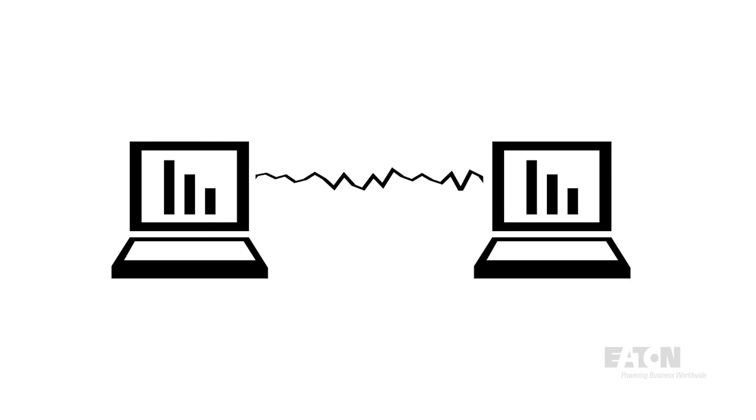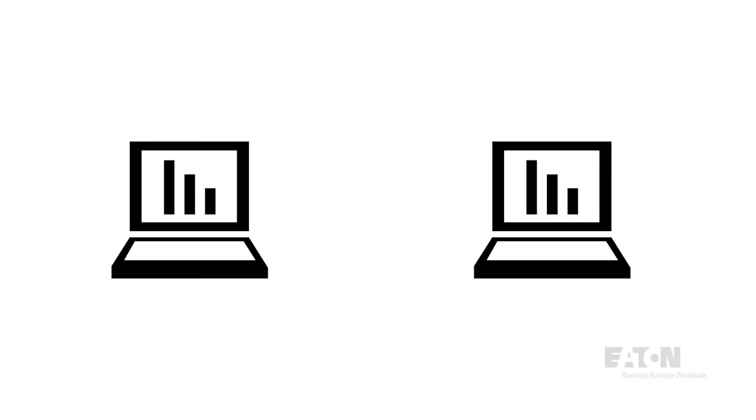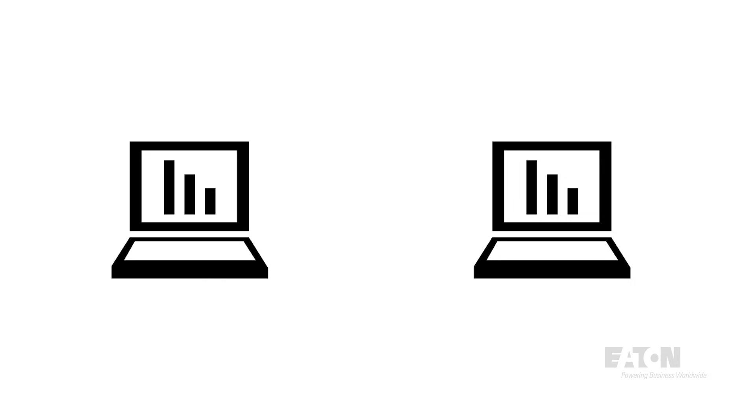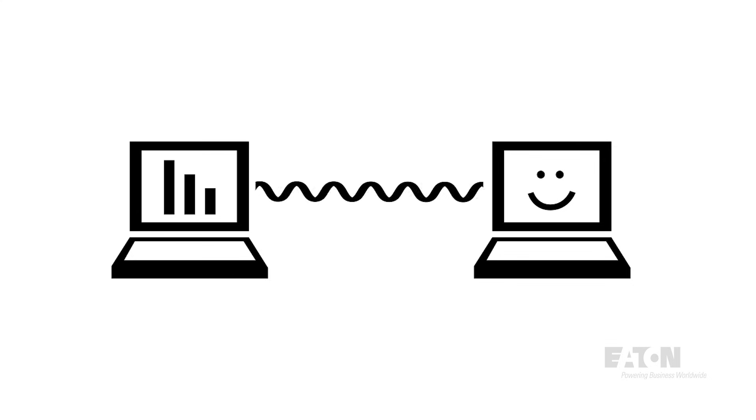Every device — be it a breaker, a meter, a PLC, or something else — will have a specific way it prefers to talk, or a communication protocol. Understanding how to network two devices is key to building a system. Communication protocols are sort of like languages: they each convey information differently, and if you want to pass information between two devices, they must speak the same language.